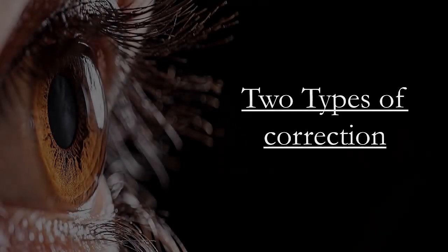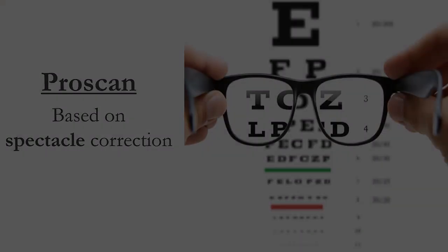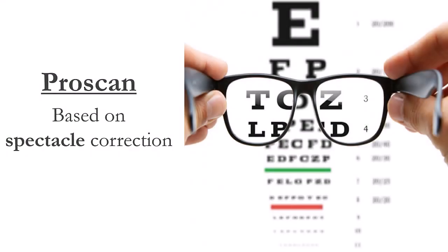There are two types of correction available. ProScan is a standard procedure where the machine is programmed to correct your refractive power based on spectacle correction.